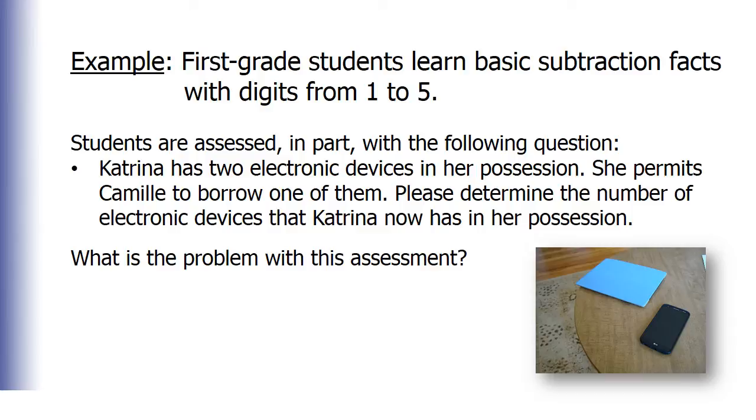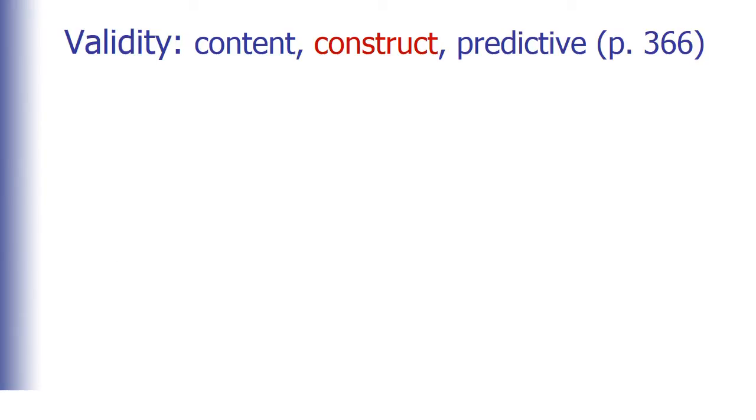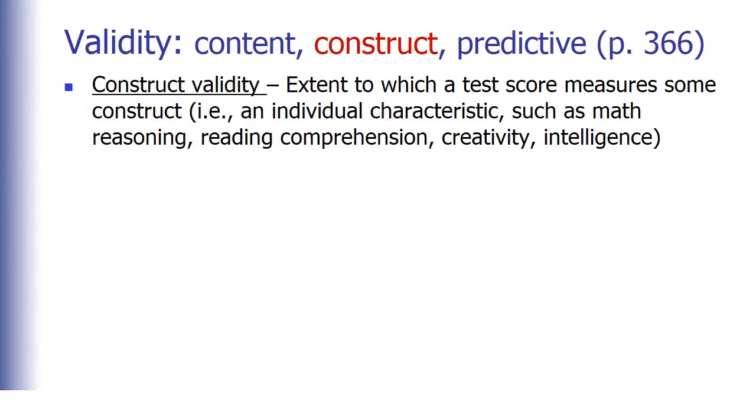The problem here relates to construct validity. Construct validity is the extent to which a test score measures some construct, that is, an individual characteristic such as math reasoning, reading comprehension, creativity, or intelligence. In this example, the question has low construct validity because the vocabulary level is very high for a first grade student. If most students cannot read and comprehend this question, then they cannot answer the question correctly, even if they know that 2 minus 1 equals 1. As a result, this question would likely measure students' knowledge and reading comprehension skills.